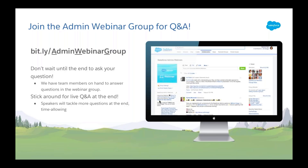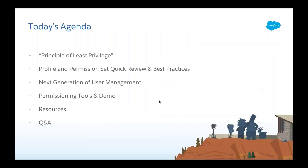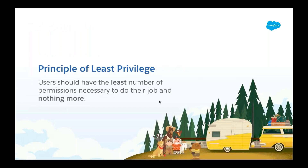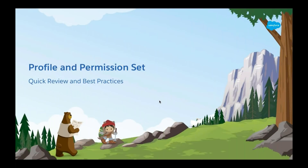Here's what we're going to talk about today: the principle of least privilege, profile and permission set quick review and best practices, the next generation of user management permissioning tools, demo, resources, and Q&A. The concept of the principle of least privilege is that users should have the least number of permissions necessary to do their job and nothing more — give people the right level of access for their roles. I'll now turn it over to Sharon.